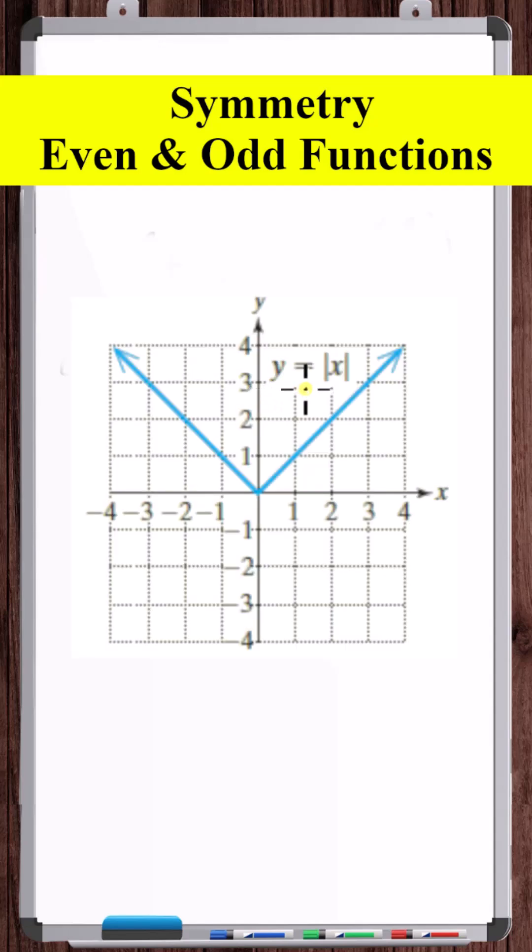If we have an equation like y equals the absolute value of x, and we substitute x for minus x and get the same original equation, then that equation is symmetric about the y-axis. x equals 2 gives the same value as x equals minus 2.